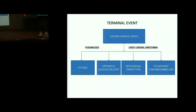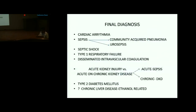The terminal event of sudden cardiac death was likely due to cardiac arrhythmia related to hypoxic-metabolic acidosis, myocardial infarction, or pulmonary thromboembolism. Final clinical diagnosis: cardiac arrhythmia, sepsis — community-acquired pneumonia and urosepsis — septic shock, Type 1 respiratory failure, disseminated intravascular coagulation, acute kidney injury versus acute-on-chronic kidney disease (chronic component being diabetic kidney disease), Type 2 DM, with suspicion of chronic liver disease.